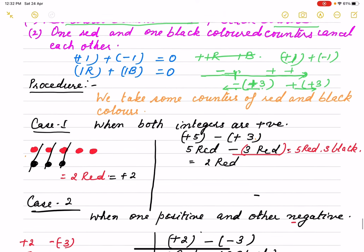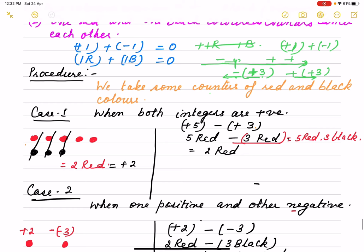So I am explaining you again. We take some counters or bindi of red and black color. First case when both integers are positive. We take first both integers are positive, plus 5 and plus 3. Both are positive and we are putting subtraction sign here.